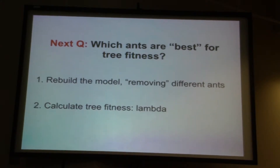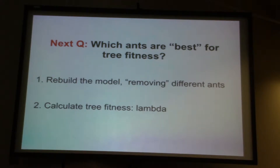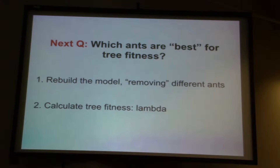The next thing we could do — and it's another kind of wonky modeling thing — is we can take this matrix model and ask which of these ants is the sort of best ant for tree fitness. So what we did was we rebuilt this demographic model and we removed different ants from the model. We disappeared certain ant species from the model with the goal of generating what tree population lambda looks like — what the fitness of this tree population looks like — if we have just a single species in monoculture, particularly ant species A, B, C, or D.